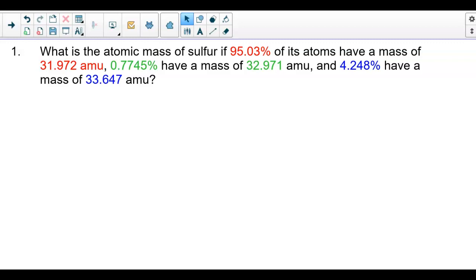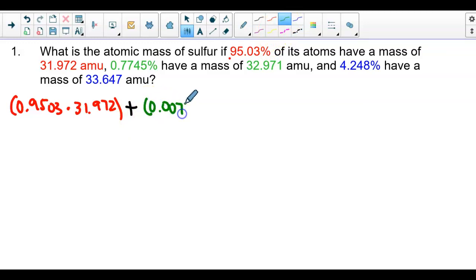So let's go through how to do one of these calculations. We're going to take the first percentage and write it as a decimal. So that's going to be 0.9503 times 31.972 plus the next isotope, its percent written as a decimal times the mass 0.007745 times 32.971, plus the third isotope 0.04248 times 33.647.